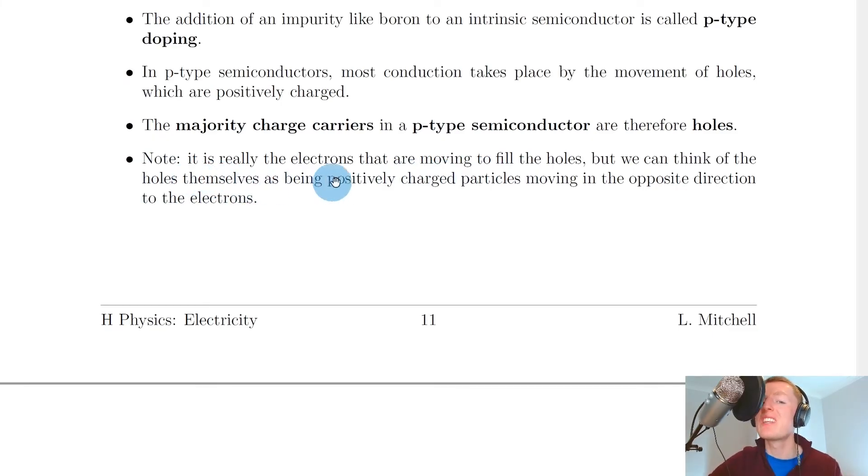It's worth noting that in p-type doping, it's really the electrons that are moving to fill the holes, but we can think of the holes themselves as being positively charged particles moving in the opposite direction to the electrons. Sometimes it's easier just to think about the holes themselves as being particles that can move, as opposed to just the electrons filling the holes which cause the holes to appear at different points in the lattice as the electrons move.